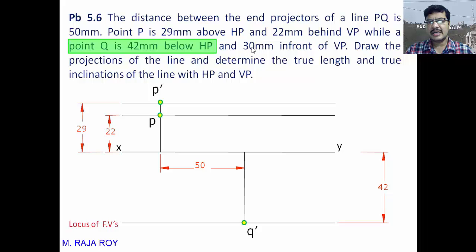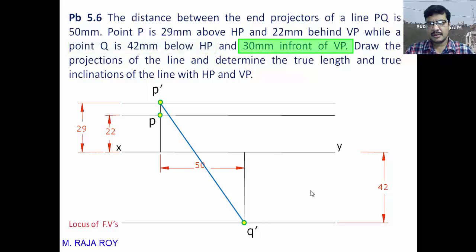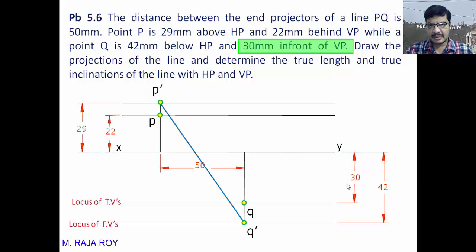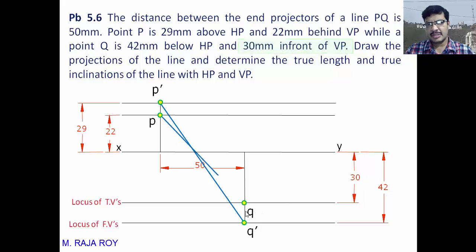Point Q is 30mm in front of VP, meaning its top view will come below the XY line at a distance of 30mm. Draw a locus line 30mm below XY — this is the locus of top views. On this locus line, where the projector intersects, you get point Q. Join P dash to Q dash for the final front view, and join P to Q for the final top view.